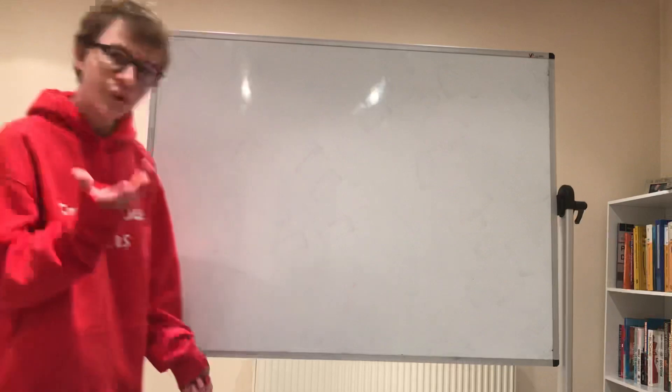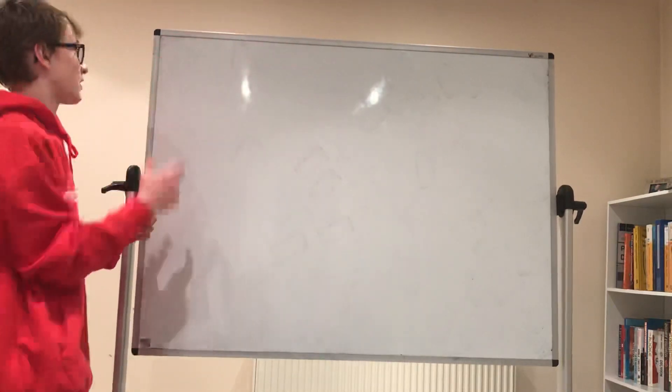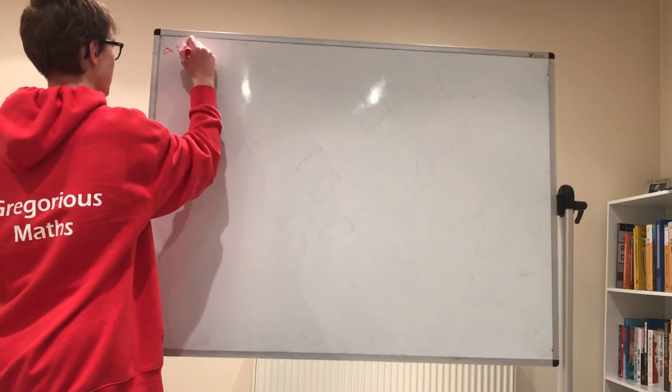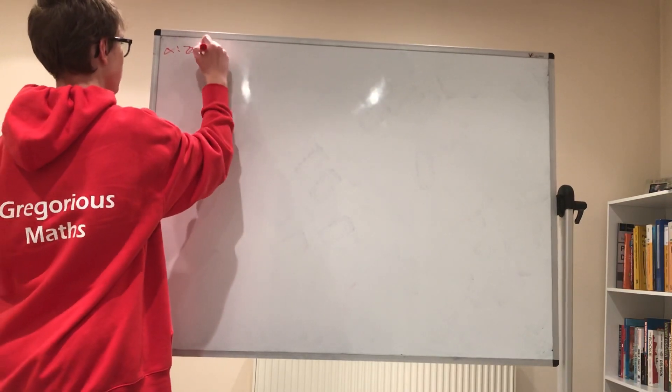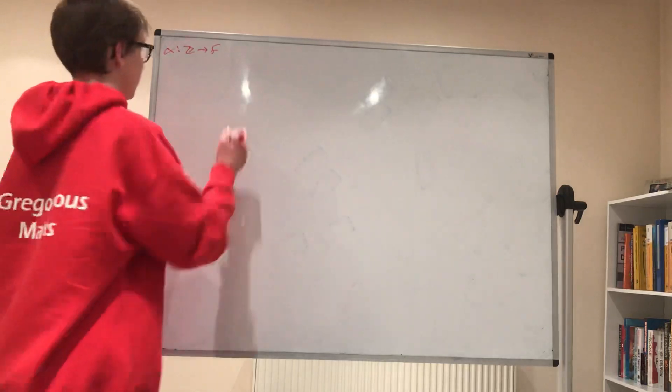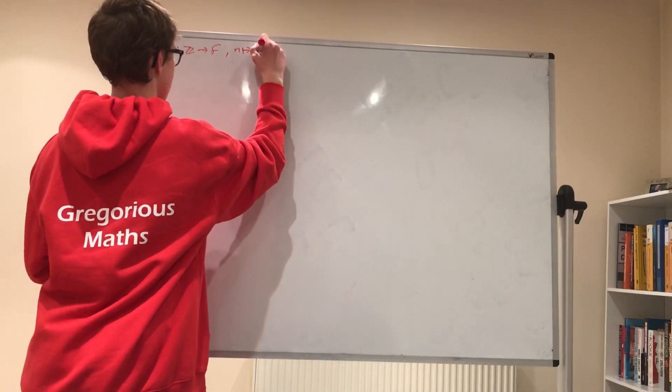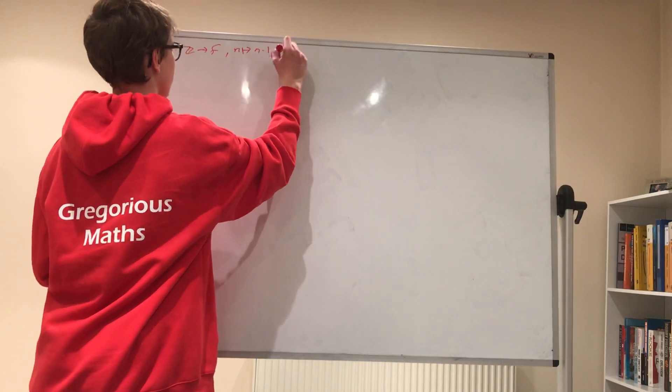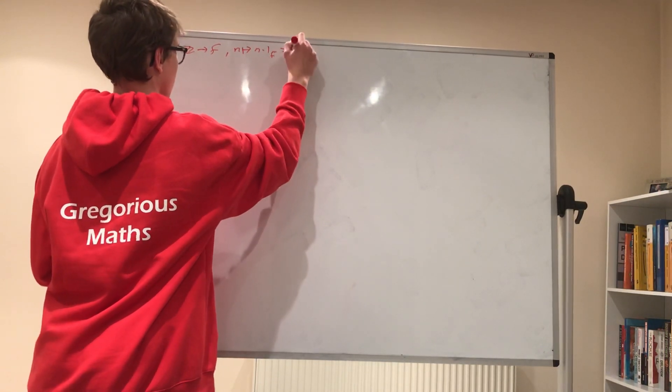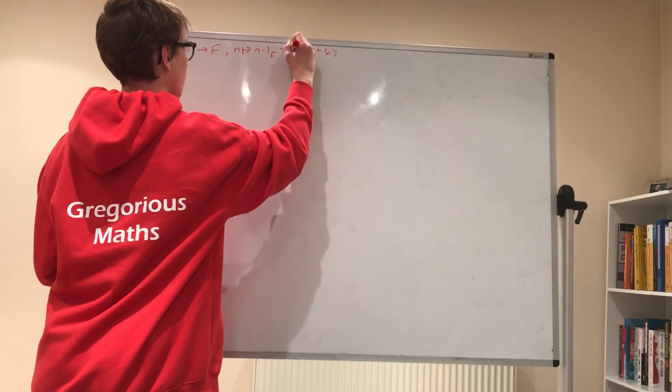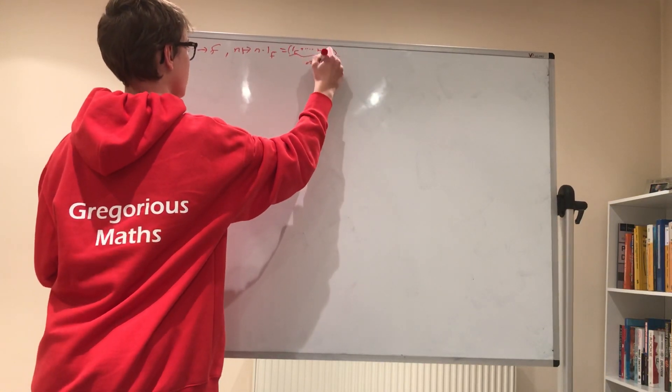To start off with, we'll just be taking a look at the map. I'll call it alpha, which takes in an integer and outputs an element of an arbitrary field f. And what it does is it sends n to n times the identity on f, or 1f plus up until 1n times.